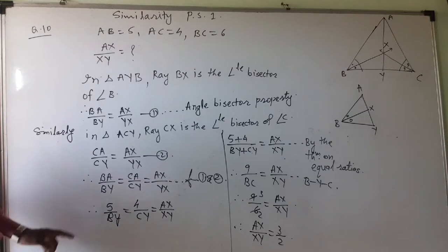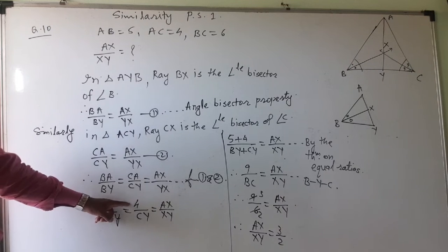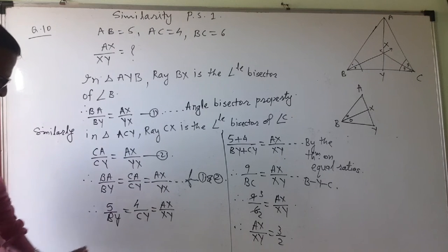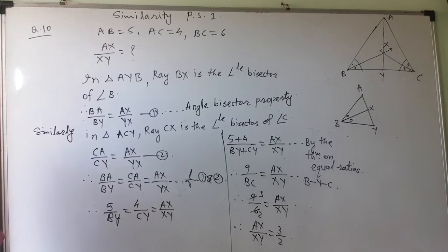Now I am putting the values: BA is 5, CA is 4, AX and YX I don't know. BY I don't know, CY I don't know.